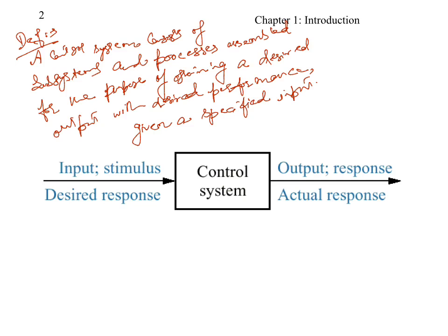Coming to the basic definition of a control system: a control system consists of subsystems and processes assembled for the purpose of obtaining a desired output with desired performance, given a specified input. In the simplest form, a control system has an input and an output. The input is the input stimulus — the desired response — and the output is the actual response that we want.